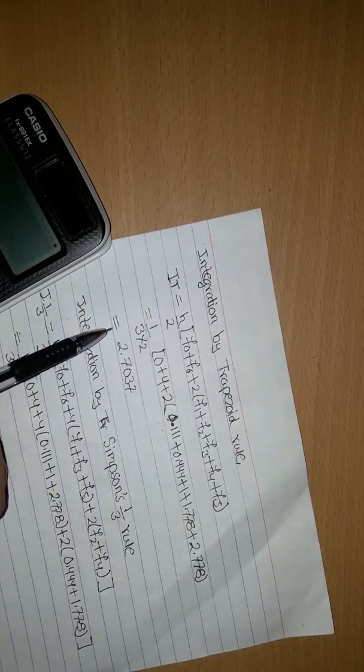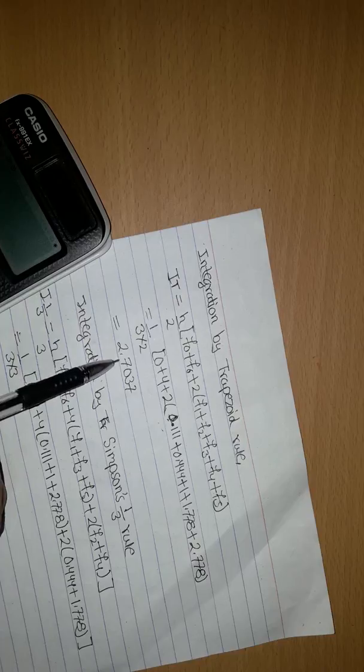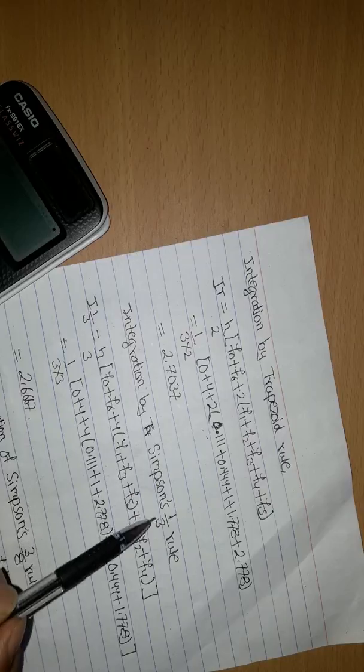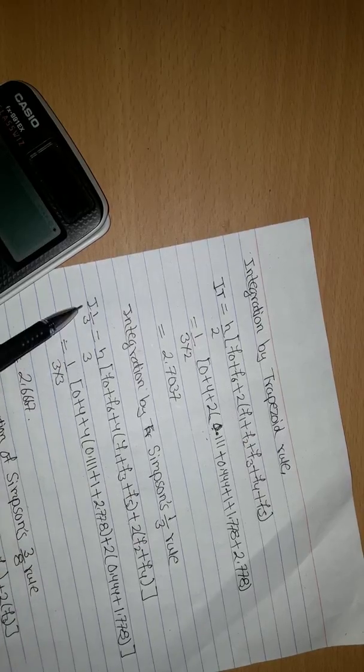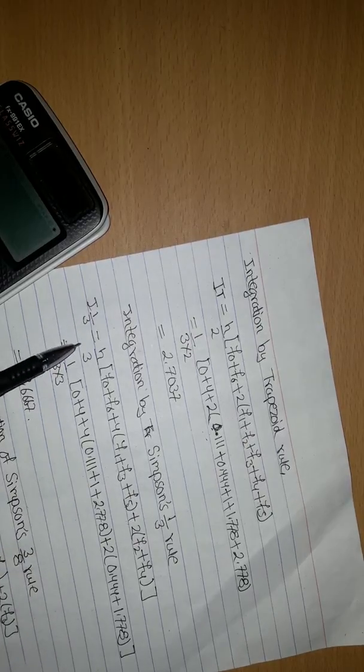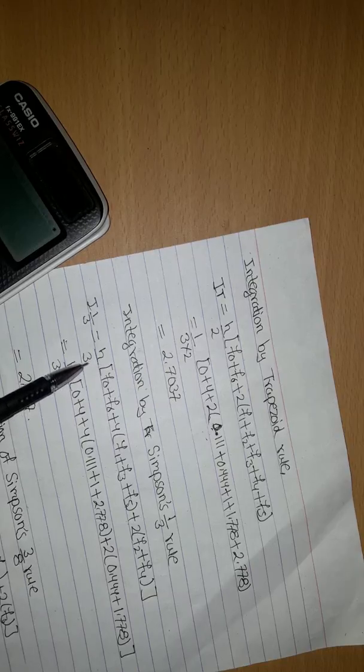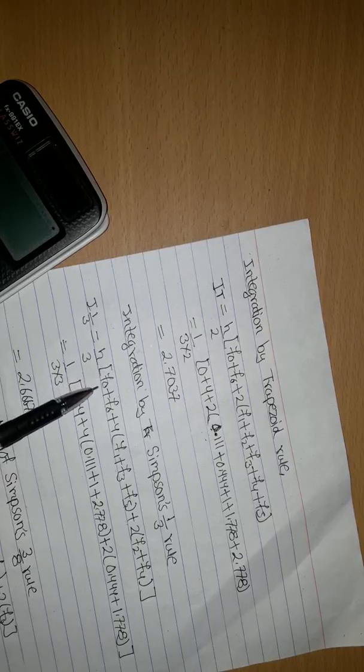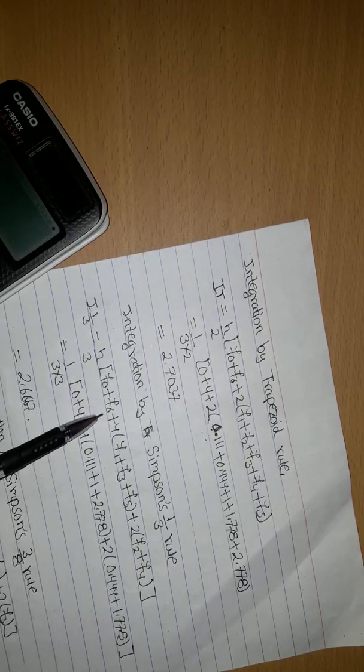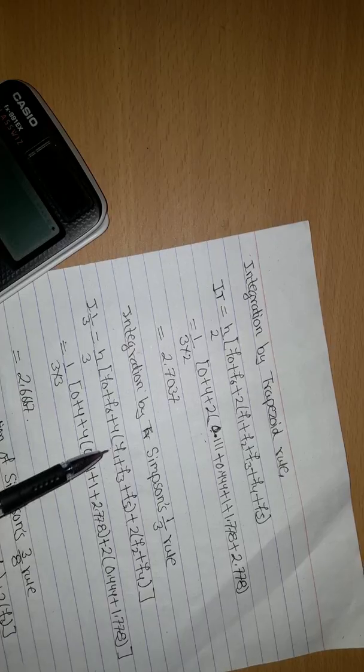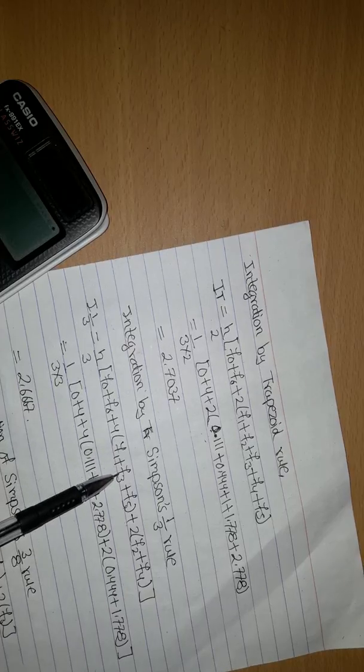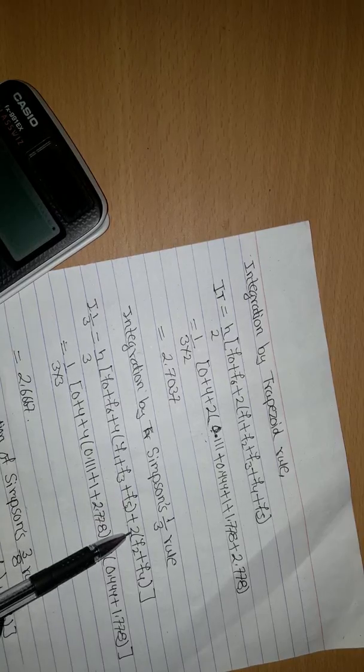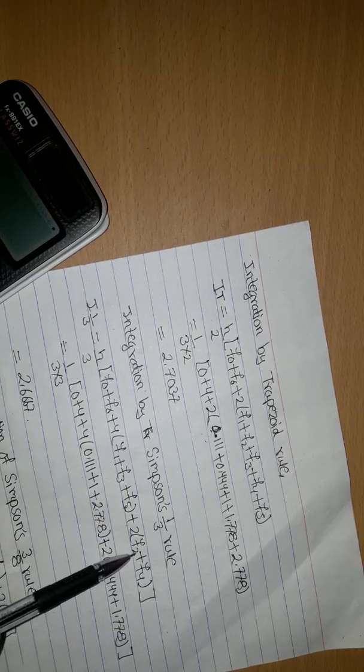Trapeze rule is equal to 2.7037. Integration by Simpson rule 1 by 3rd. Formula: H divided by 3 bracket F0 plus F6 plus 4 bracket F1 plus F3 plus F5 plus 2 bracket F2 plus F4.